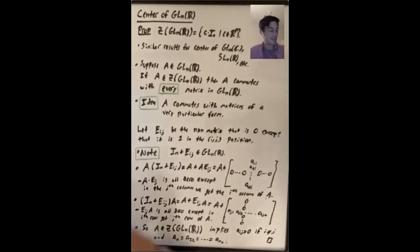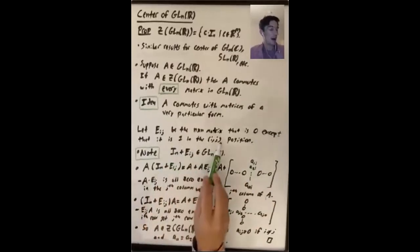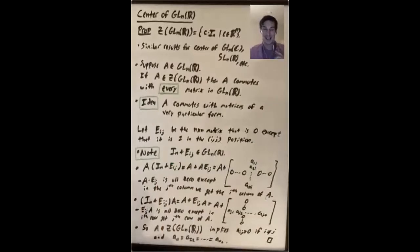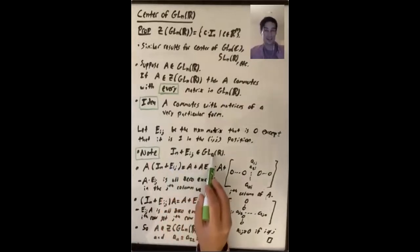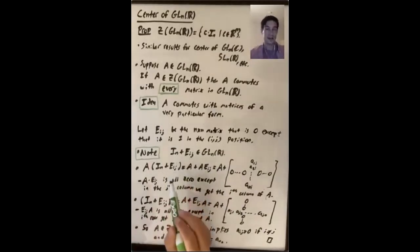So what we'll do is let Eij be the n by n matrix that is entirely zero, except that it's one in the ij entry. So you might think, aha, A has to commute with these Eijs. No, that's not what I'm saying, because this matrix has determinant zero if n is bigger than one. But if you take this Eij and add the identity matrix, now you have a matrix in GLnR. So this is the key thing to remember for this argument, is that we're going to see what things are in the center by first saying what things even commute with these matrices.